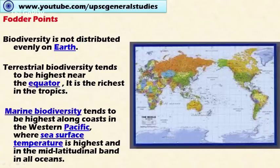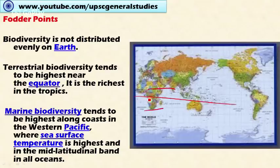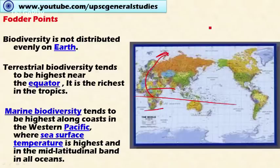Biodiversity is not distributed evenly on the earth. Biodiversity tends to be higher near the equator and is richest in the tropics. As we move away from the equator towards the poles, biodiversity declines because of unfavorable conditions for the growth of plants and animals. In the tropics, temperature is uniform and congenial throughout the year, whereas temperate areas experience harsh cold climatic conditions in certain seasons, causing animals to hibernate and plants to go dormant.